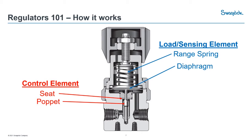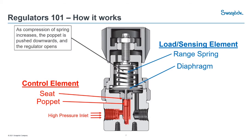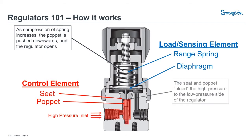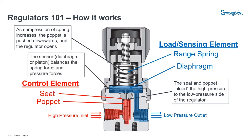Here's how these actually work. Our high inlet pressure enters the regulator. You then start to turn that handle, and as you turn it, you compress the spring. That moves the poppet downward, and eventually your regulator opens. As it opens, you start to bleed that high pressure fluid over to your low side. Once it reaches the low pressure you had set, the regulator moves into self-actuating mode, and the diaphragm or piston — depending on which model you have — balances those forces together to maintain the pressure you had set.